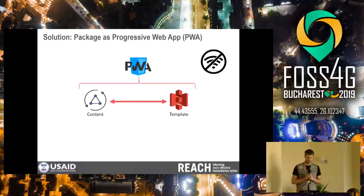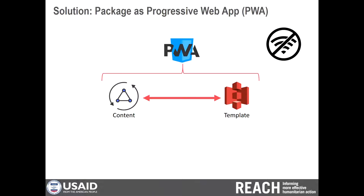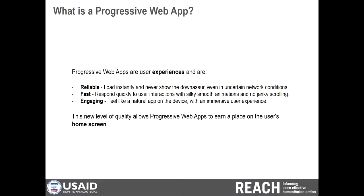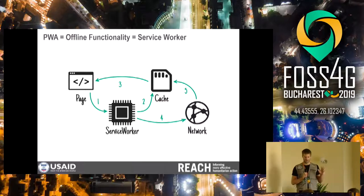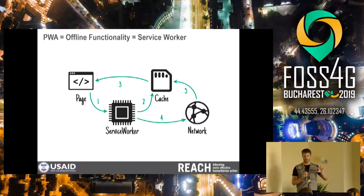One thing we can do is turn this into what's called a progressive web app. There are technologies that let you package websites and make them available offline. It really means offline functionality, and this means you're going to use a technology called a service worker. This is something that you attach to your page when it loads — it controls your network requests, gets what you need from an offline-available cache, and delivers that to your users. If it can't find something in the cache, it goes to the network.